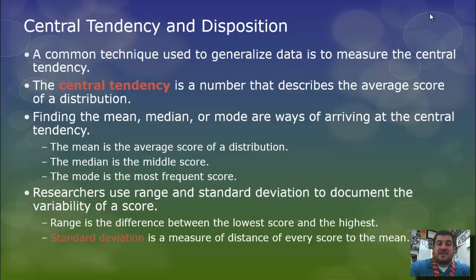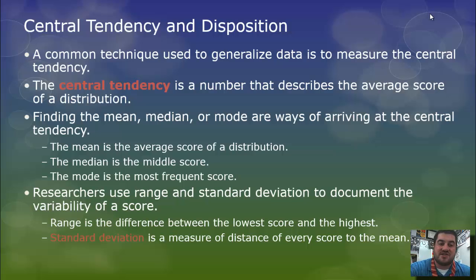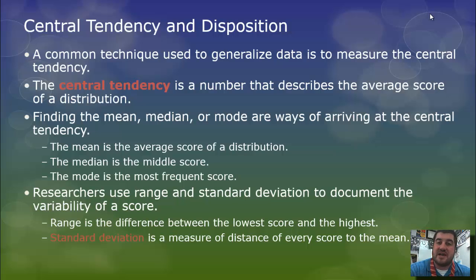Let's talk about central tendency. We've done this in math before — it's a number that describes the average score. Different measures of central tendency are mean, median, and mode. The mean is the average. The median is the middle. The mode is the most frequent score. They're all measures of central tendency.